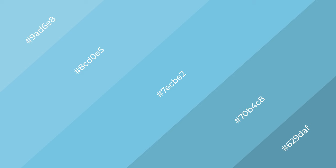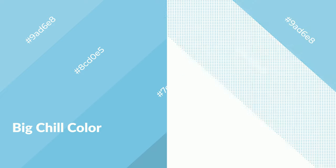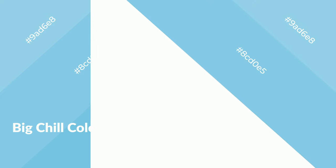Big Chill is a cool color, and it emits calming, serene, soothing, refreshing, spacious, unwinding, peace, and relaxed emotions.